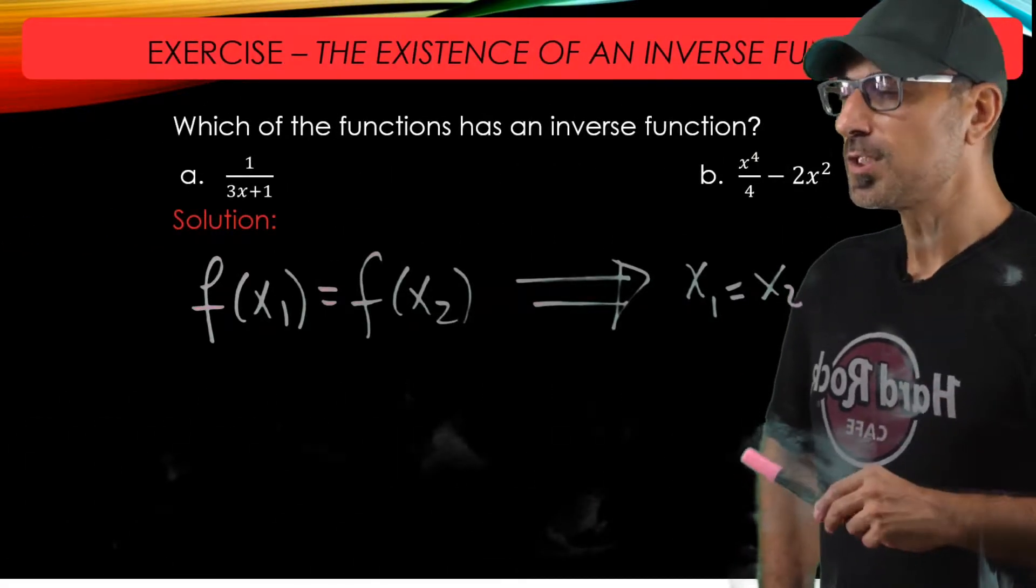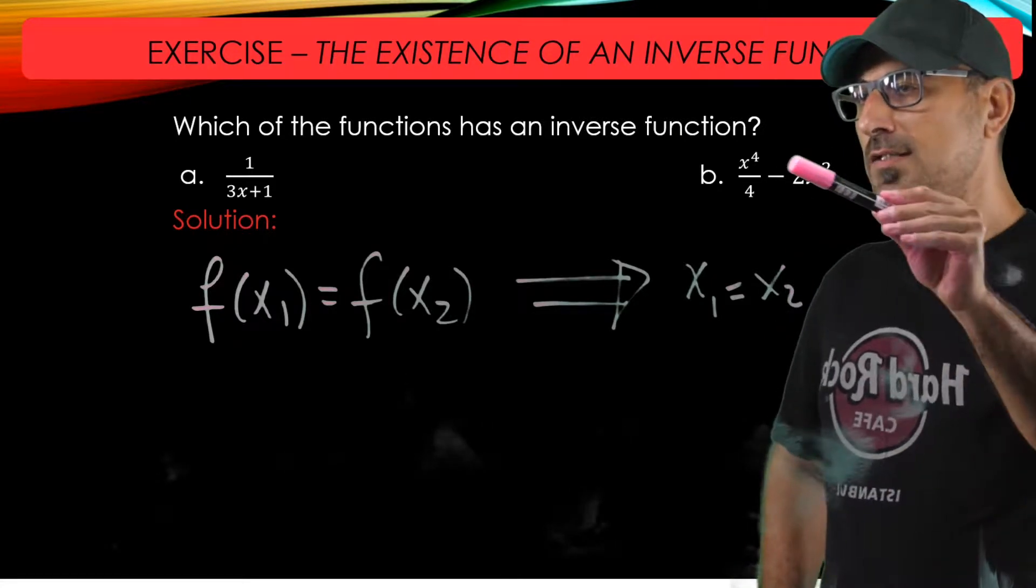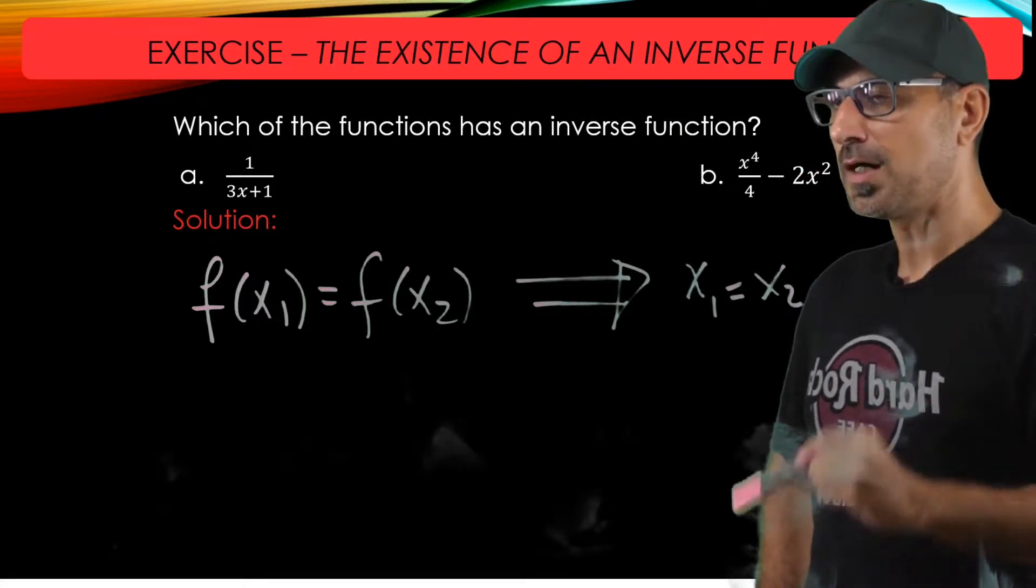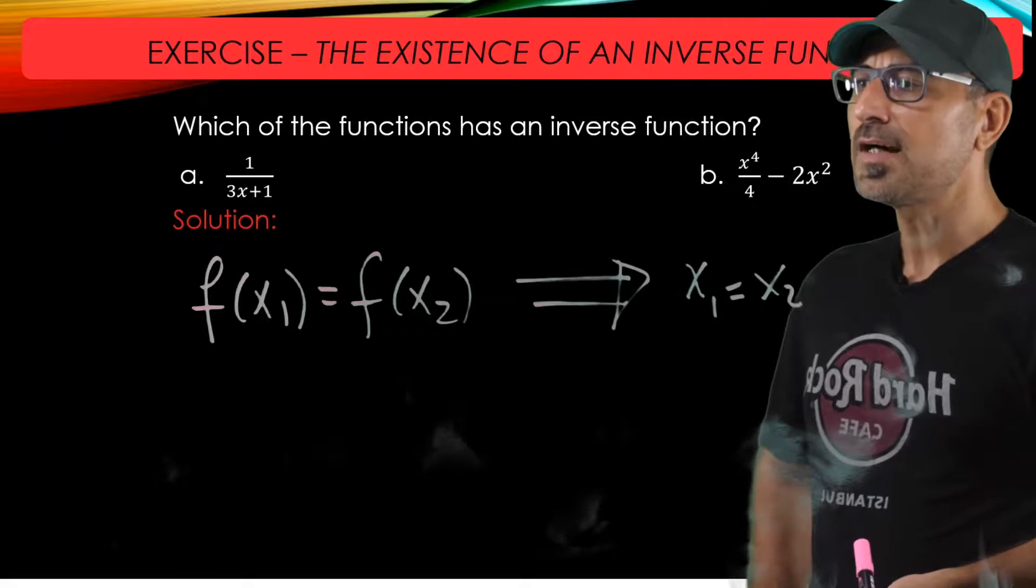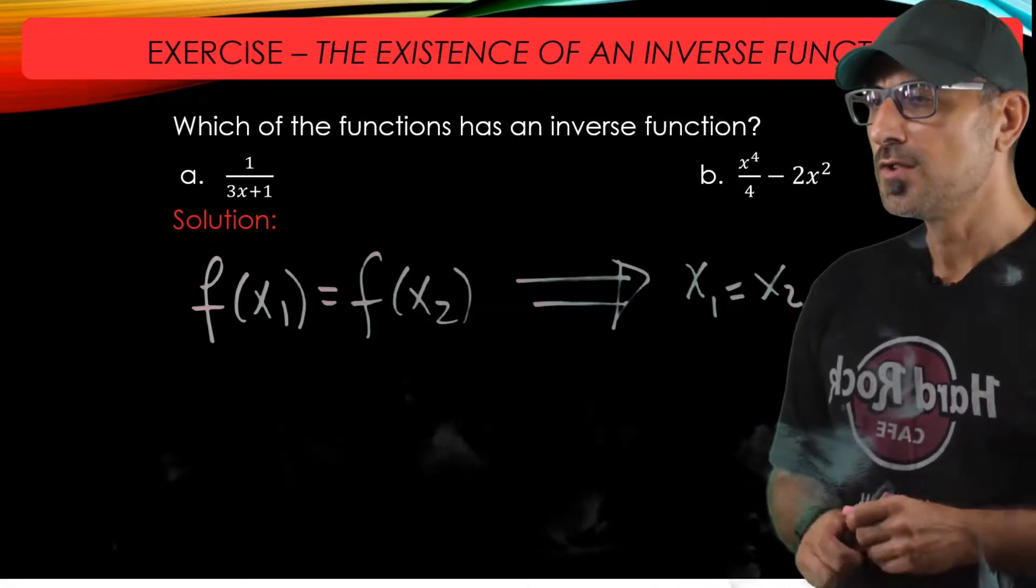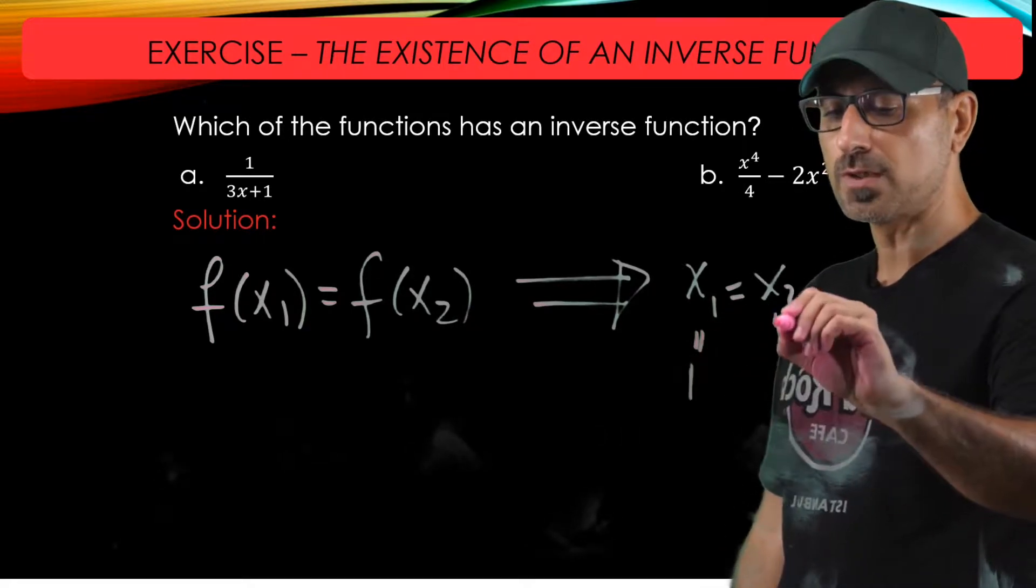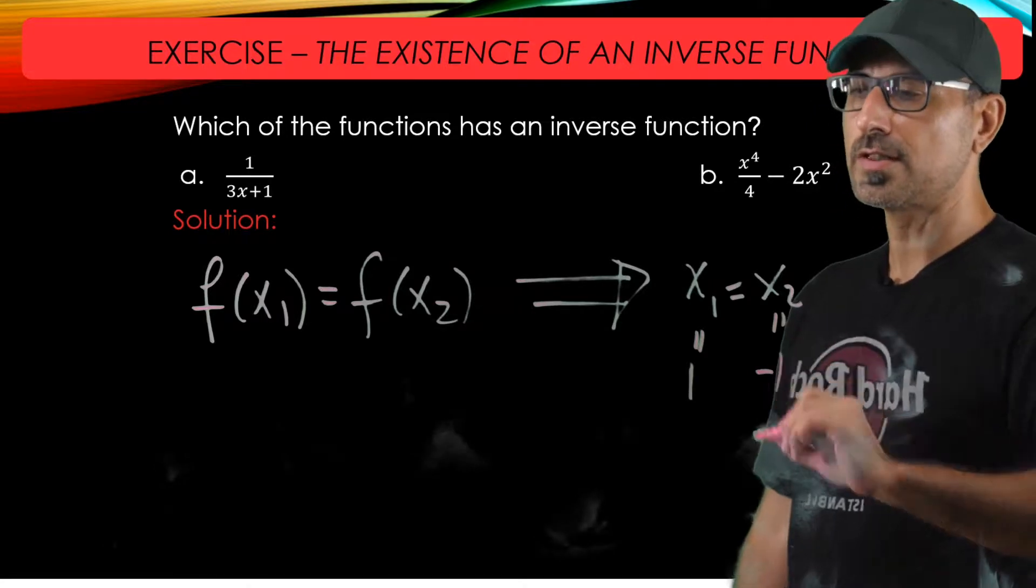For the second function, the one-to-one property is not going to be satisfied, because you take the fourth power here and then the second power here. In fact, I can find two different values of x for which the function values are equal. So here we go. I'm going to go with x1 equals one and x2 equals negative one.